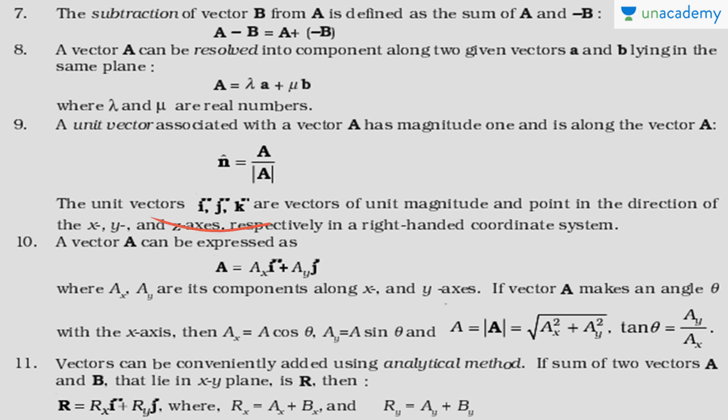We have discussed i cap, j cap, and k cap. A 2D vector can be represented as Ax i cap plus Ay j cap - the x component and the y component. In that case, the magnitude is under root of Ax squared plus Ay squared, and the angle the vector is making with the x-axis is tan theta equals Ay by Ax. If you do Ax by Ay, then tan theta will give you the angle vector A is making with the y-axis. Just remember what component you are keeping in numerator and what in denominator.